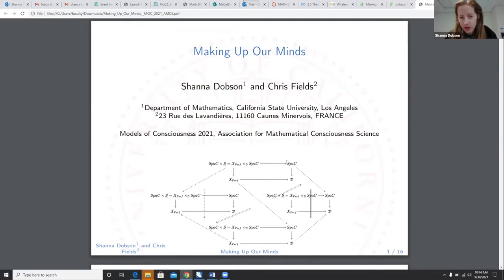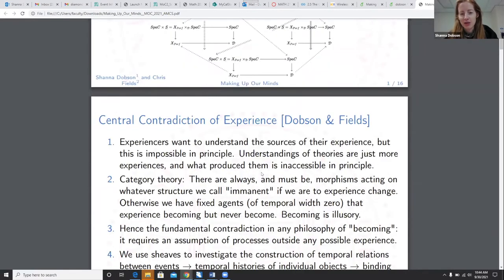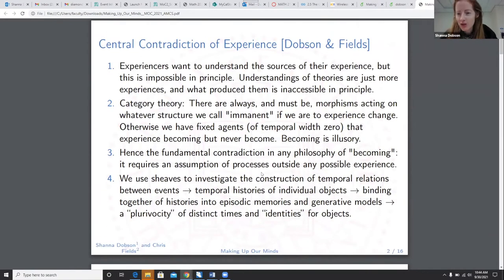What I have displayed here is a conjecture of mine using Peter Schultz's concept of a diamond. I've made an infinity category out of it, so thank you Sophie for introducing category theory. I don't have to talk much about it. There is a central contradiction of experience. Experiencers want to understand the sources of their experience, but this is actually impossible in principle.